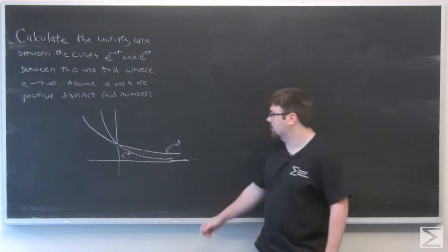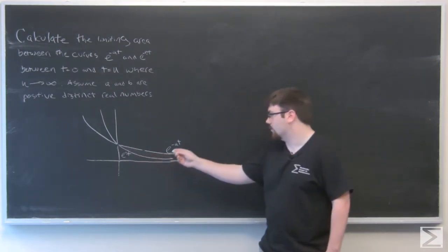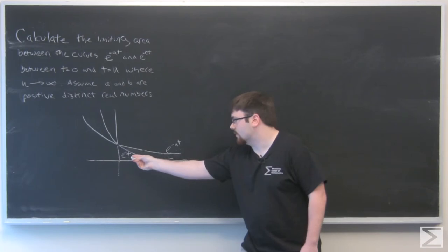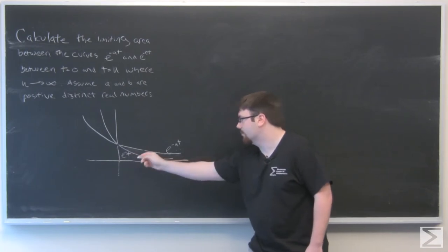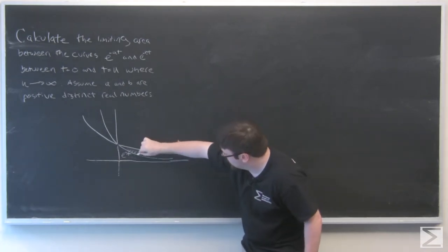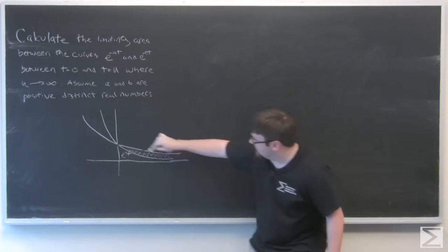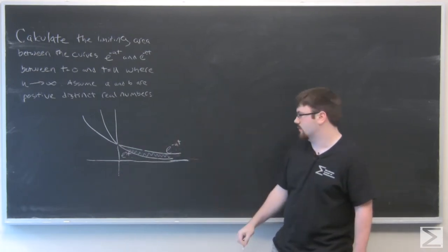I've drawn the graph here with e to the negative at on top, e to the negative bt on bottom, so we're looking for this area from t equals zero as u approaches infinity.